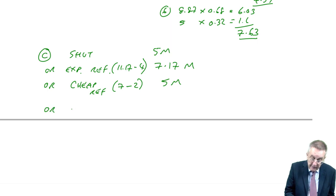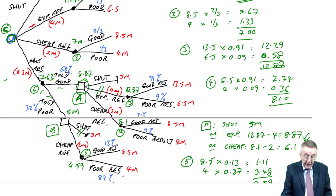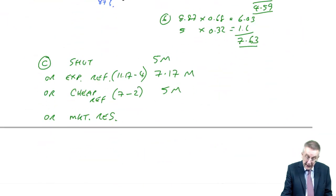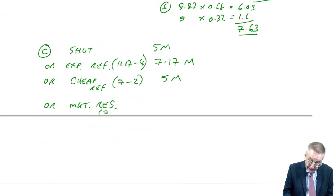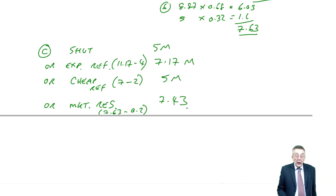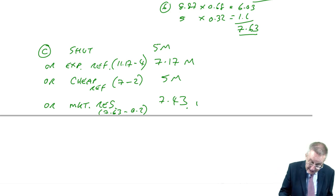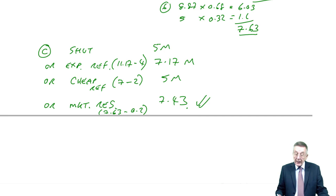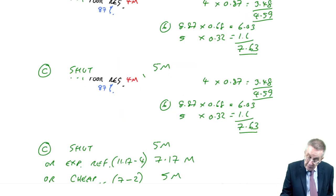Or finally, we do market research. And market research, we pay out 0.2 and get back 7.63. It's our choice. And we'll pick whichever is the best of those four. The best is in fact to do the market research. 7.43.